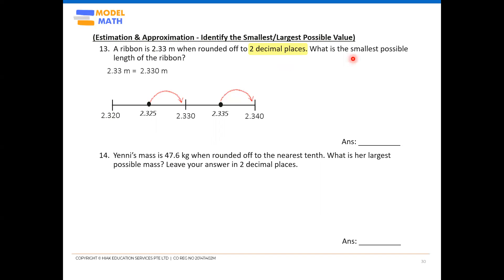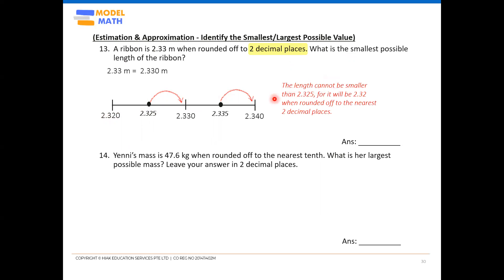So let's find the smallest possible length — look at the left side. Always look at the midpoint first: 2.325 rounds up to 2.33, so is this the smallest? Yes, it definitely is — because anything smaller than 2.325 will round down to 2.32 already. The length cannot be smaller than 2.325, because anything smaller would round down to 2.32, which is not what we want. The smallest possible length is 2.325 meters.